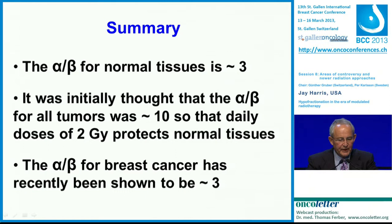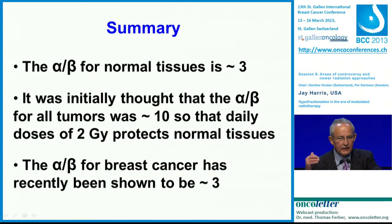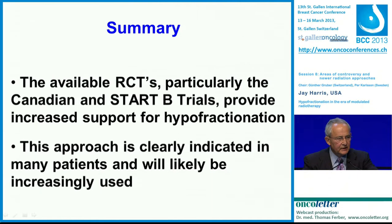We know that the alpha-beta ratio for normal tissues is about 3. It was initially thought that the alpha-beta ratio for all tumors was about 10, so that daily doses in the range of 1.8 to 2 gray protected normal tissues. But recently we've learned that the alpha-beta ratio for breast cancer is about 3, which is the same as for normal tissues, and that radically alters how we think about fractionation. The available randomized clinical trials, particularly the Canadian trial and the updated results from the START-B trial shown in San Antonio, provide increased support for hypofractionation. This approach is clearly indicated in many patients and will be increasingly used in the future.